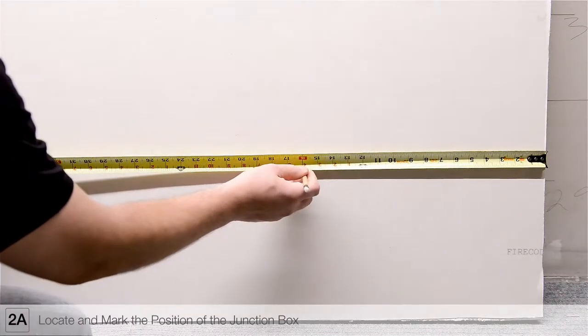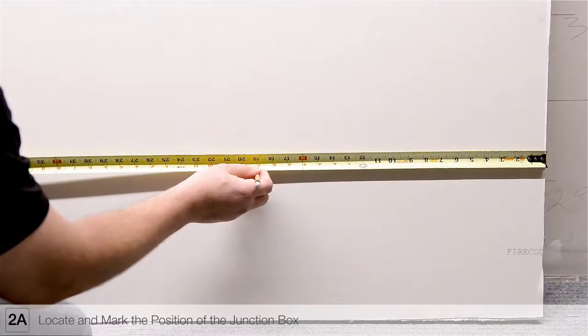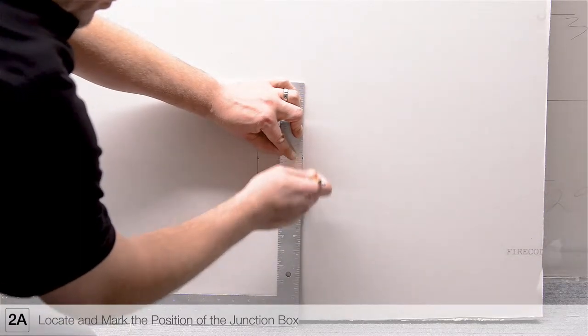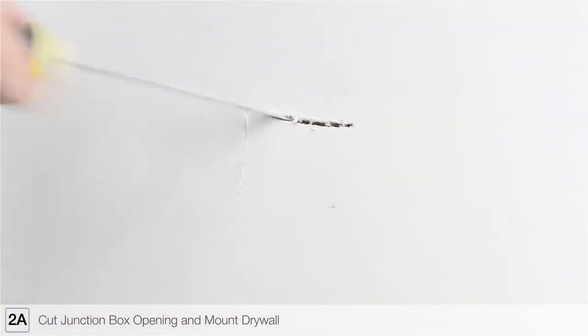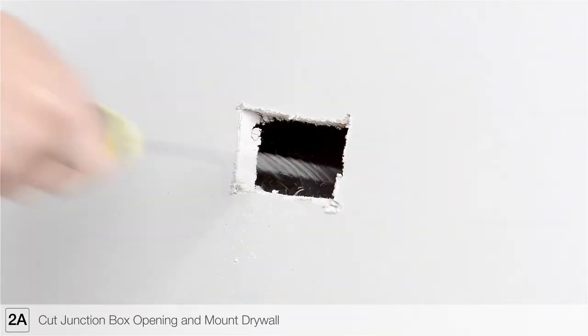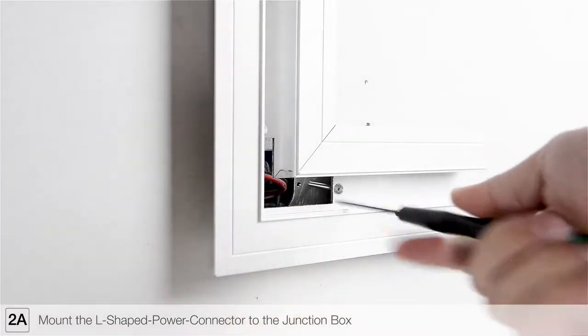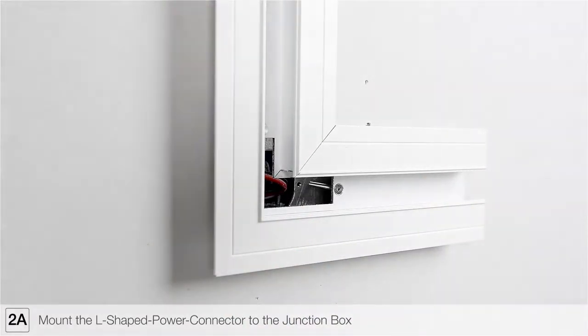Before drywall is installed, locate and mark the position of the power feed junction box using the measurements taken in previous steps. Cut the drywall using a jab saw or other appropriate tool to expose the junction box. Mount the L-shaped power connector to the junction box. Ensure the power connector is level before marking.